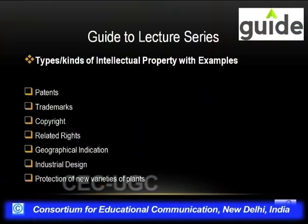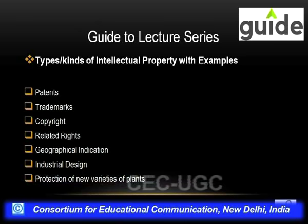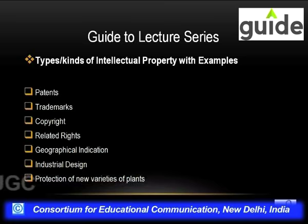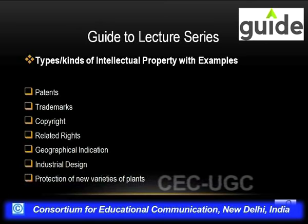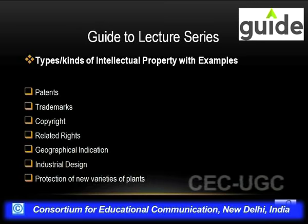For the whole series introduction, the next thing we'll look at is the kinds of intellectual property with examples. There are several kinds: patents, trademarks, copyright and related rights, geographical indications, industrial designs, and protection of new varieties of plants. We will take these up exhaustively along with case studies, nuances of each kind, their subject matter, protection procedure, enforcement, and civil and criminal remedies.